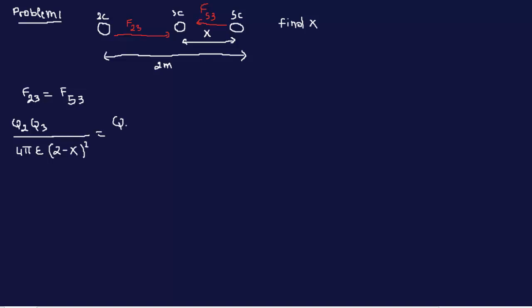That's equal to Q5 Q3 over 4 pi E. The distance between 3 and 5 is x, so we have x squared. From now on, it's just basic math trying to find x. We can go ahead and cancel 4 pi E because we have it on both sides. We are left with Q2 Q3 x squared equals Q5 Q3 times 2 minus x squared.